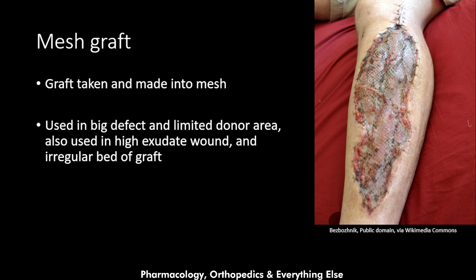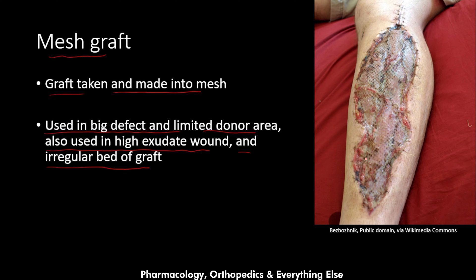When wounds are too large and there is not enough graft to cover them, a mesh graft is used. The graft is taken and made into a mesh, which is used in large defects with limited donor area, in highly exudative wounds, and in irregular wound beds, as shown in this example.